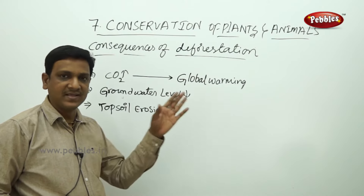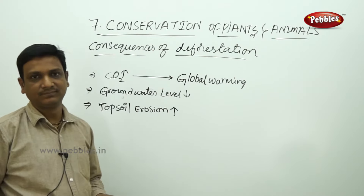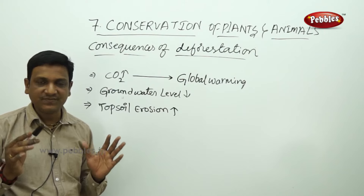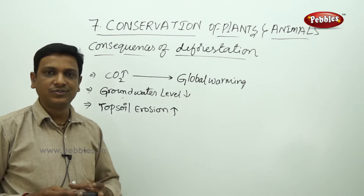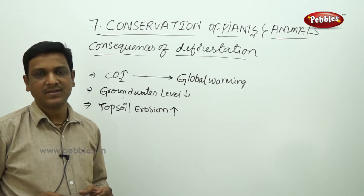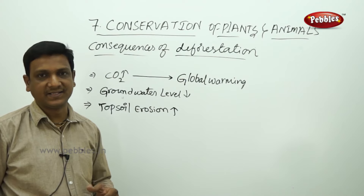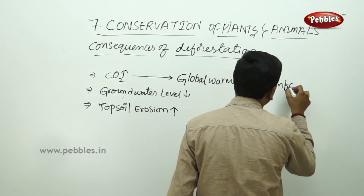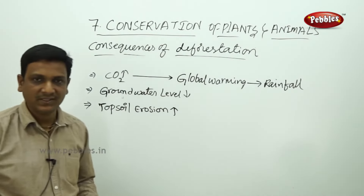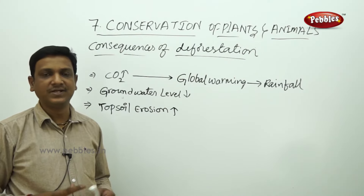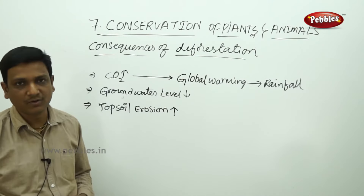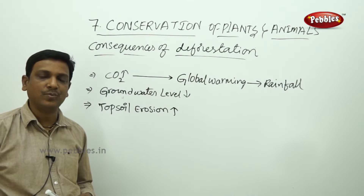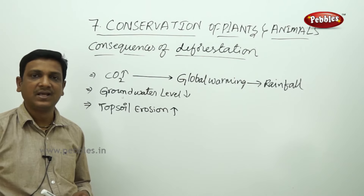Global warming disrupts the water cycle and monsoon patterns. We have specific seasons for rainfall, and our crops are planned accordingly. When this cycle is disrupted, rainfall patterns change. Decreased or unexpected rainfall leads to losses for farmers and less crop production. The high amount of CO2 increases the temperature on the planet, which has many effects on plants, animals, and human beings.